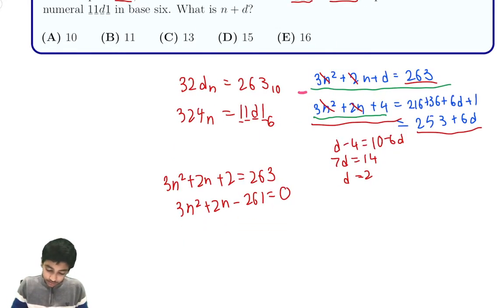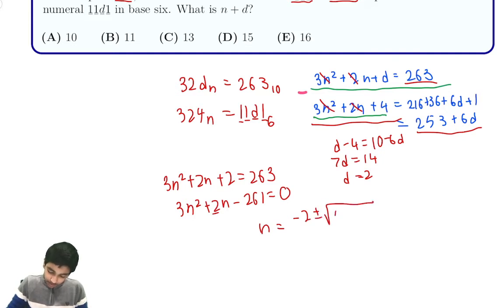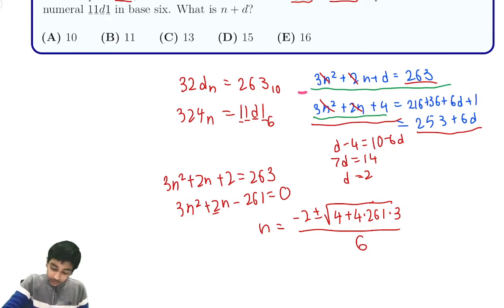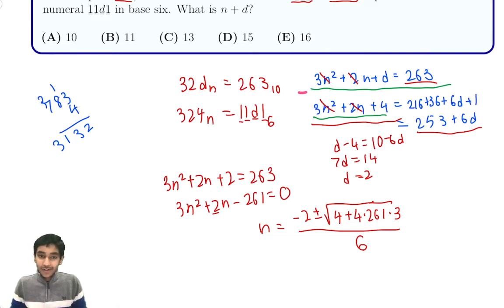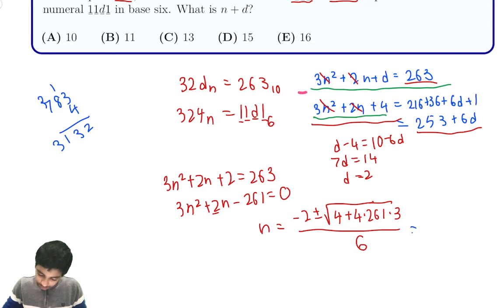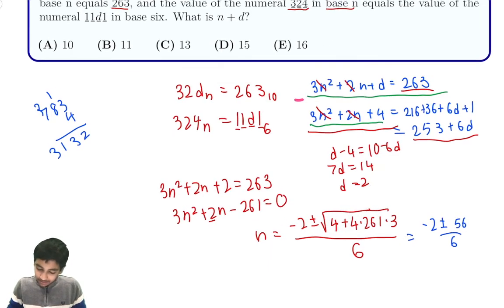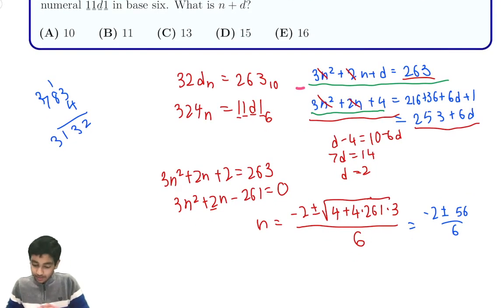From here there are various ways to solve it, but we can apply the quadratic formula. n equals negative 2 plus or minus the square root of 4 plus 4 times 3 times 261, all divided by 6. We see that 261 times 3 is 783, and 783 times 4 is 3132. Then 3132 plus 4 is 3136, and the square root of 3136 is 56. So n equals negative 2 plus 56 over 6.